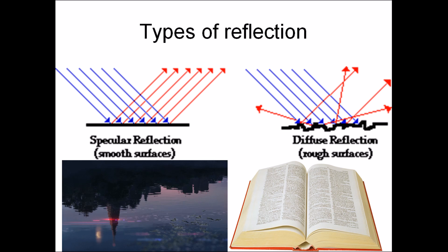There are two main types of reflection: specular and diffuse. Specular reflection occurs when light bounces off a smooth surface like a mirror. Diffuse reflection, on the other hand, is when light bounces off a rough surface, like when you read a book. In diffuse reflection, light travels in all directions.